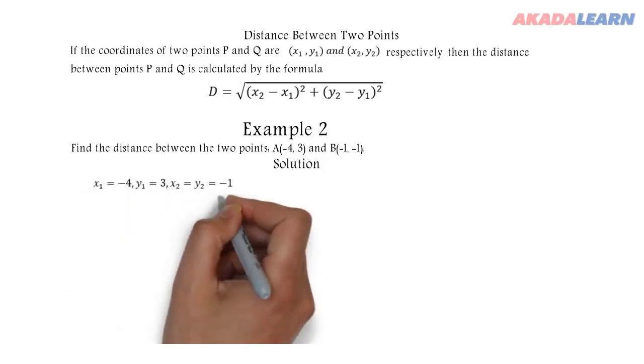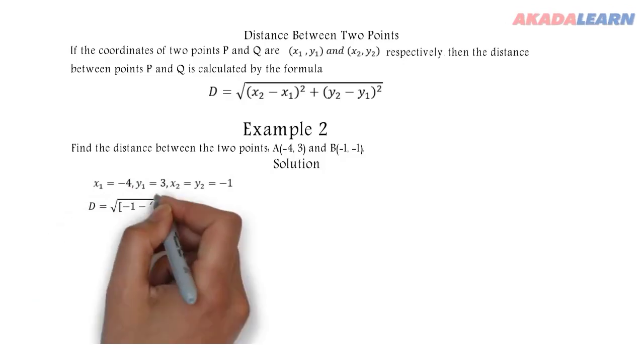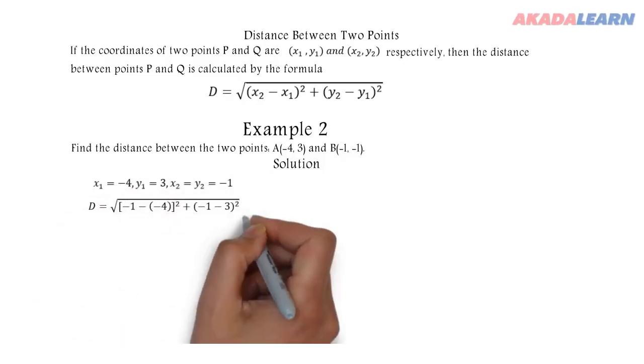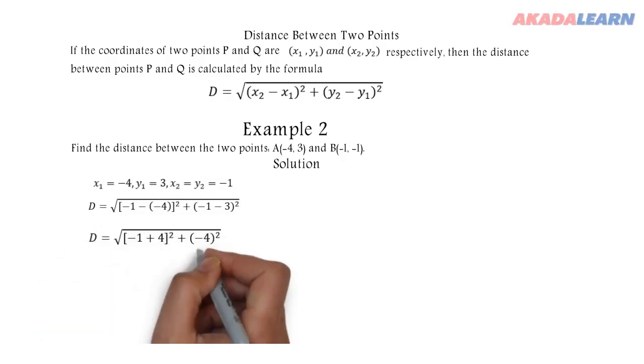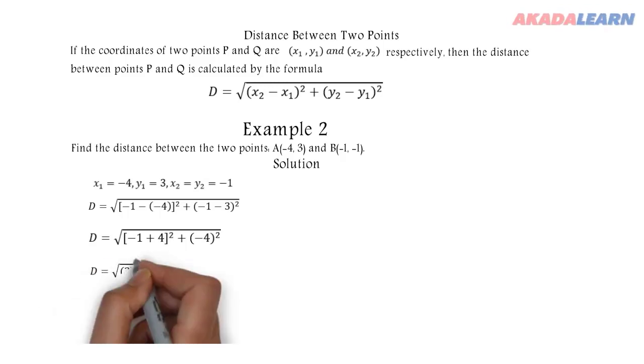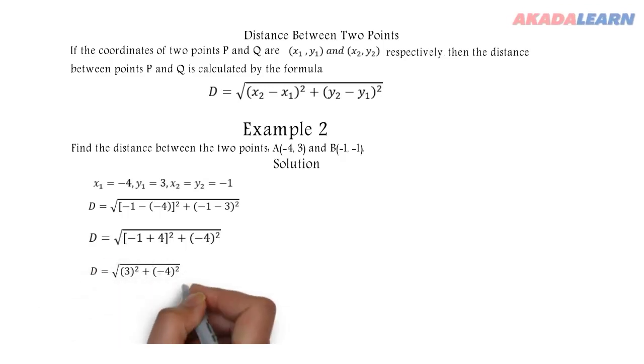D will be equal to: -1 minus -4, which is -1 plus 4, that's 3. And -1 minus 3 is -4. So we have 3² which is 9, and -4² which is 16. So when we add together, 9 plus 16 is 25, and the square root of 25 gives us a distance of 5.